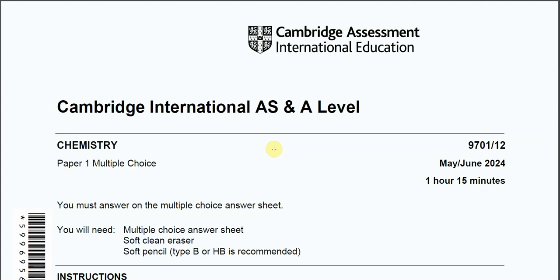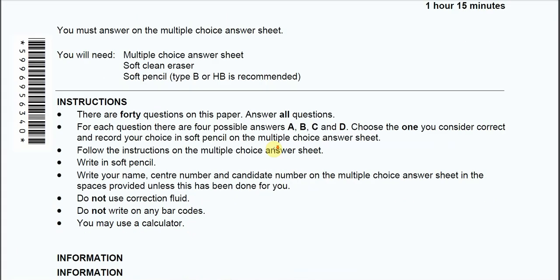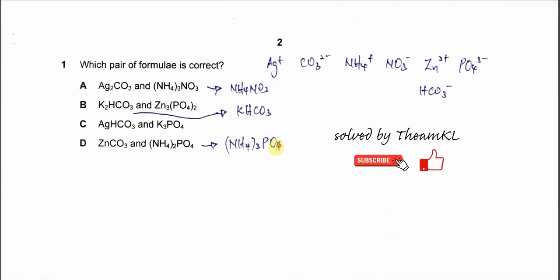May-June 2024, Paper 1, Variant 2, Question 1. This question is quite easy. First, you need to know the charge of the cation and anion.